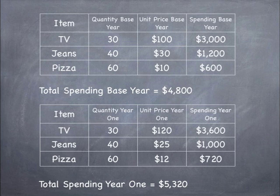The spending for year one for TVs would be 30 times 120, which gives us 3,600. The spending for year one for jeans would be 40 times 25, which gives us 1,000. And the spending for year one for pizza would be 60 times 12, which gives us 720. So the total spending for year one is 5,320.